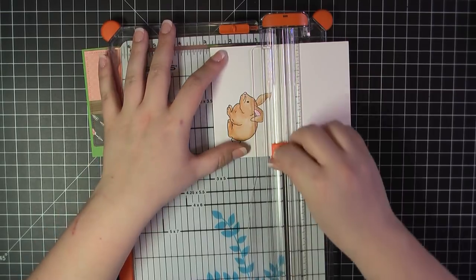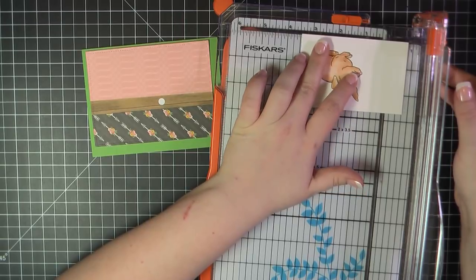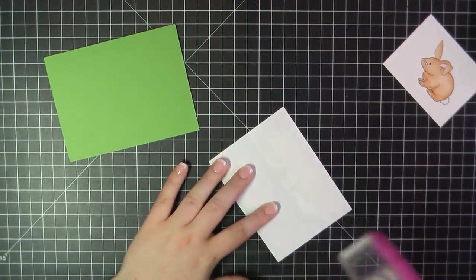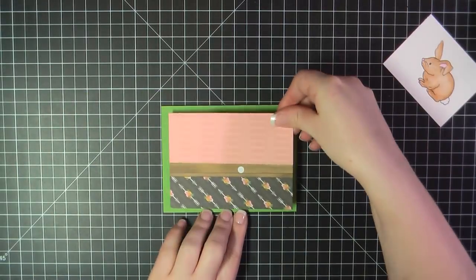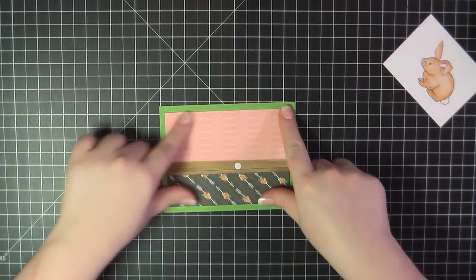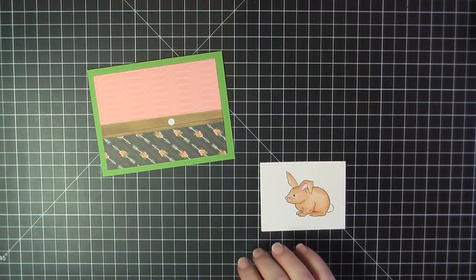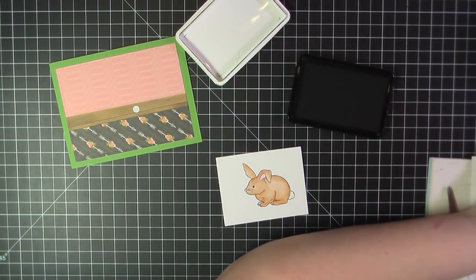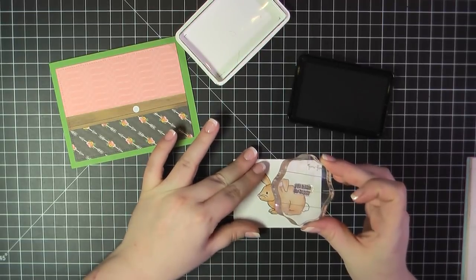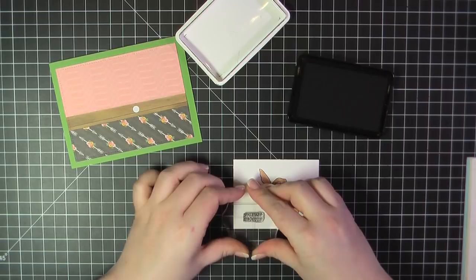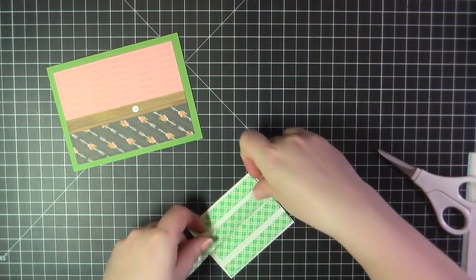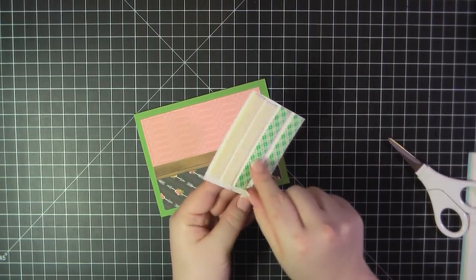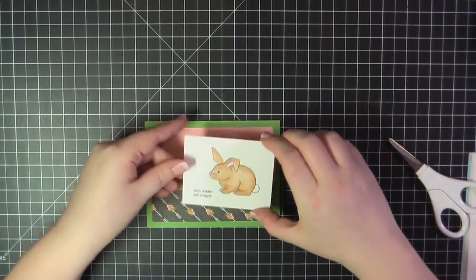Then I trimmed down my Bristol cardstock with the bunny and this ended up measuring three and a half by two and a half inches. I'm going to attach that panel to the top of a green card base. Next, I wanted to stamp a sentiment next to that bunny. So I went with You Make Me Hoppy and I'm going to use Simon Says Stamp Intense Black Ink. I'm going to pop that panel up using some Scotch Foam Tape and place that on the front of the card base.